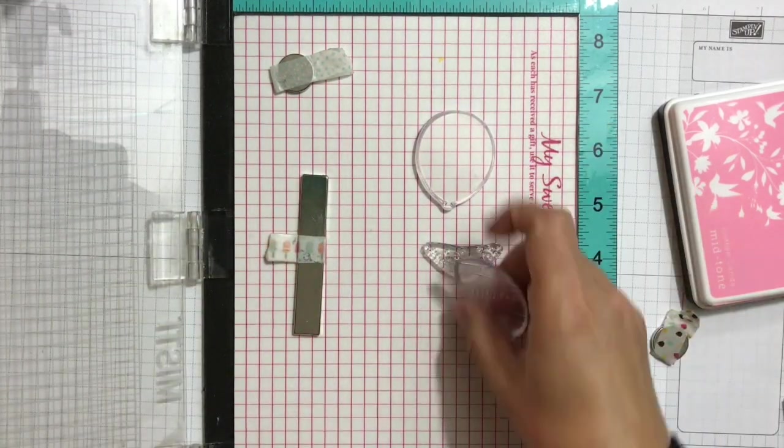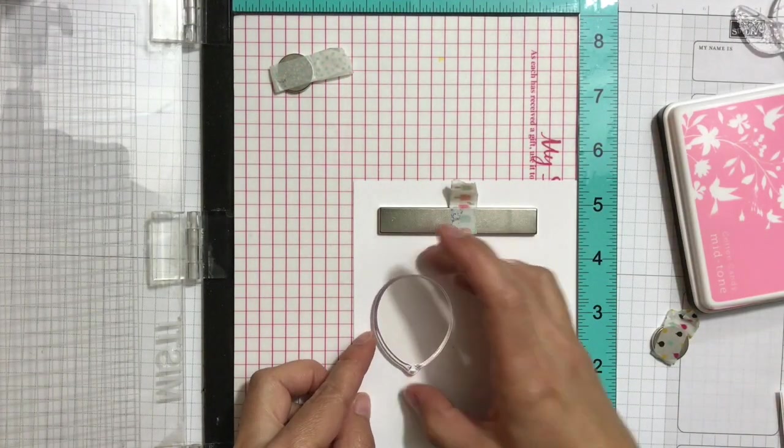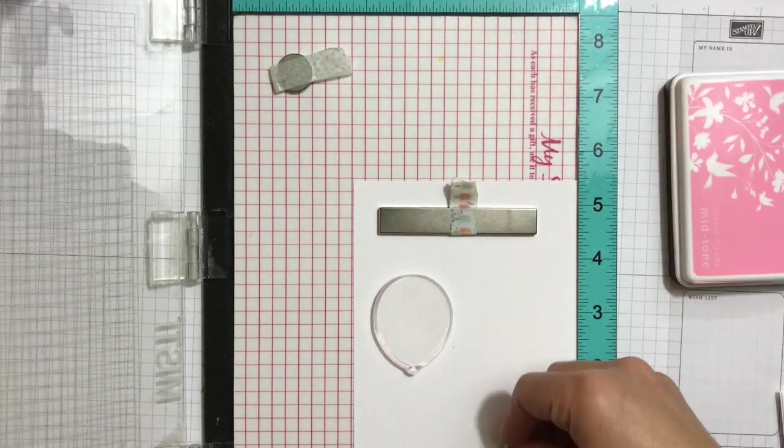Here you will notice that my MISTI has the blue stickers on. You can now personalize your original MISTI with blue or white stickers that are available on the My Sweet Petunia website.